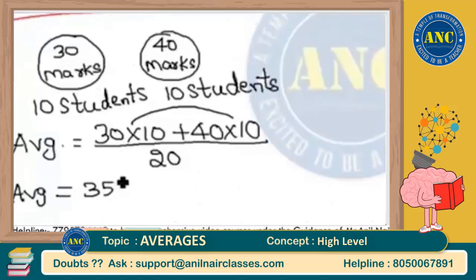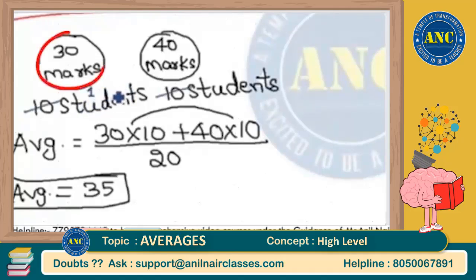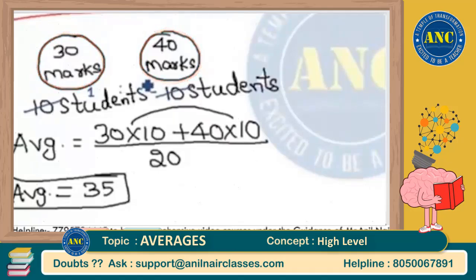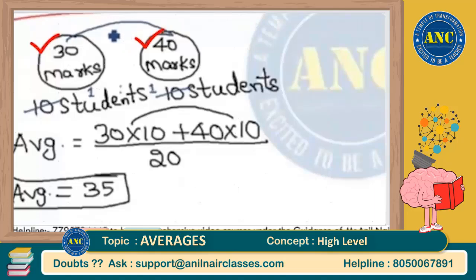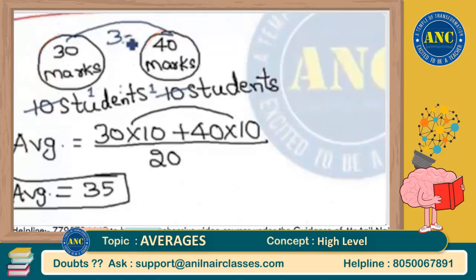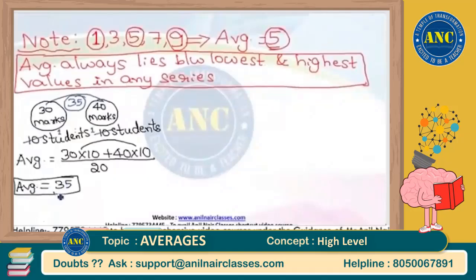700 divided by 20 is 35. The average marks of both sections is 35. In simple language, since the number of students in both sections is equal — the ratio is 1:1 — whenever the ratio is equal, the average is simply the average of the given marks: 30 + 40 divided by 2. The middle value is 35. That is exactly what we got.